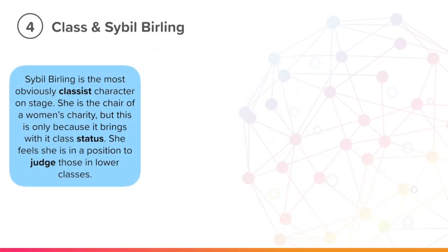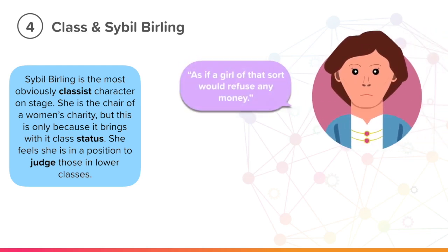Sybil Birling is the most obviously classist character on stage. This means she sees working class people as below her in every way and feels no guilt in treating them badly. She is the chair of a women's charity, but this is only because it brings with it class status. She feels she is in a position to judge those in the lower classes and give or take away life-saving help based on her own prejudices. Of Eva, she says, 'As if a girl of that sort would refuse any money.'